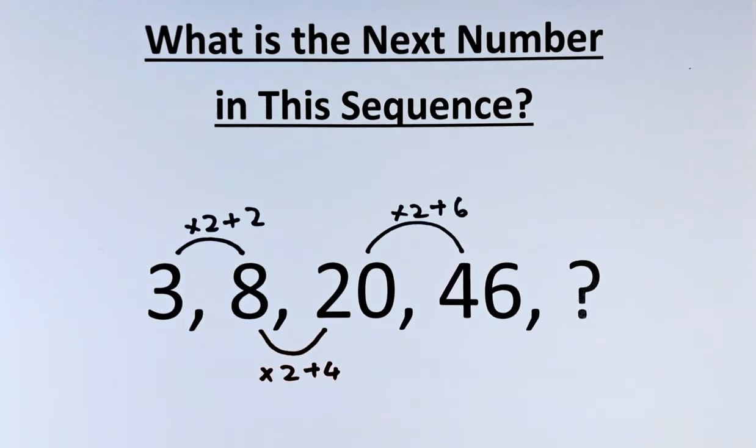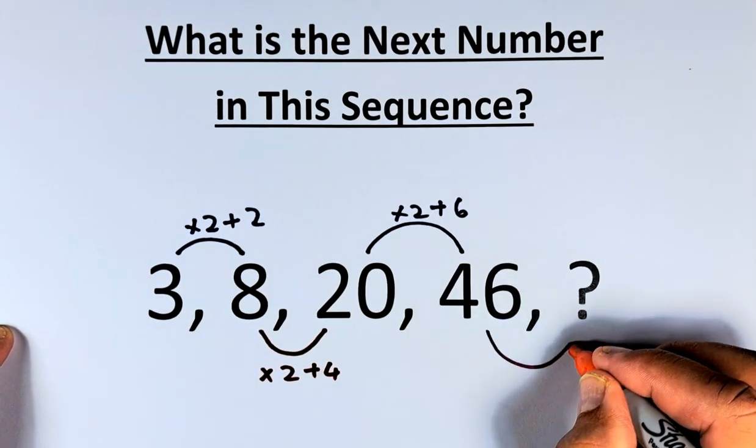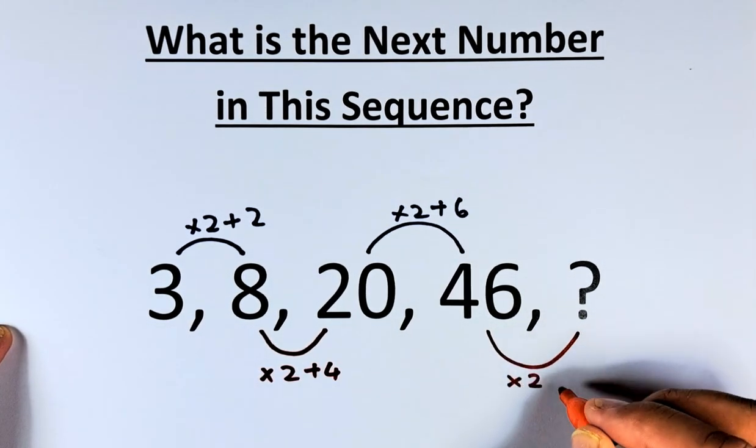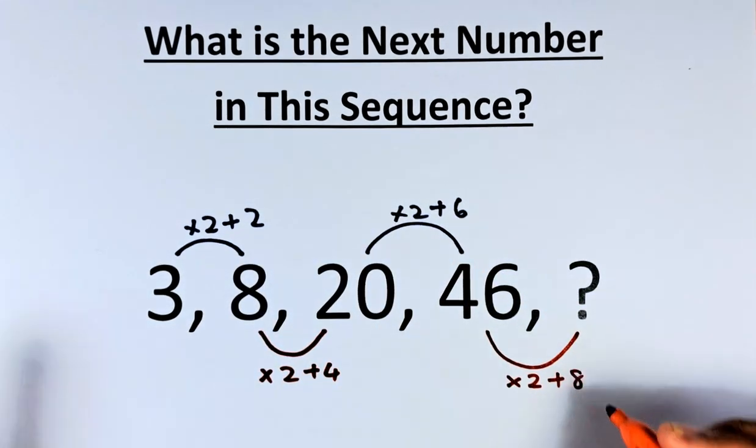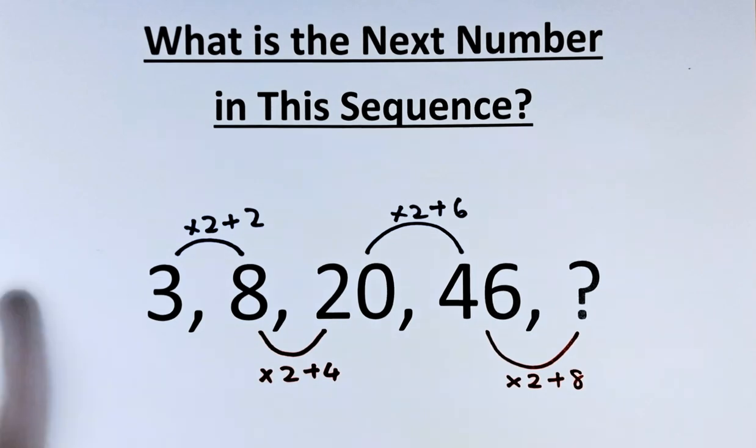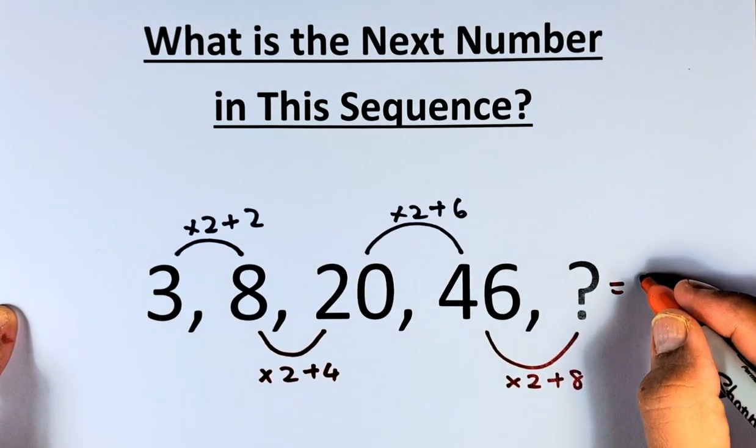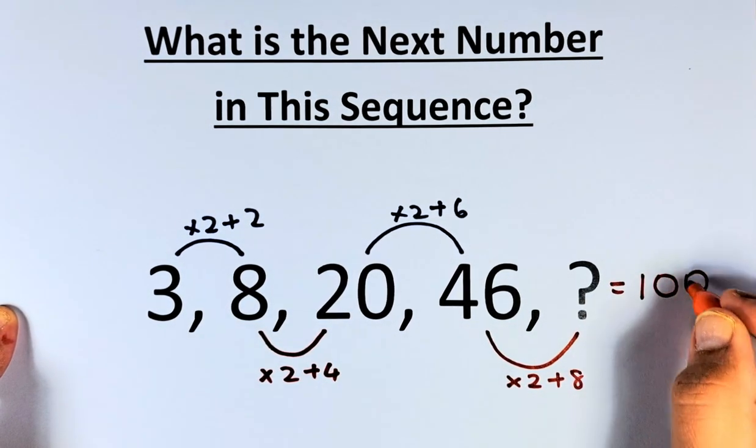And last but not least, we are going to move from 46 to the question mark. So again, we are going to multiply 46 by 2. And this time, because you add 2, 4, 6, the next number must be 8. So 46 times 2 is going to be 92. 92 plus 8. And the question mark is a beautiful number, 100.